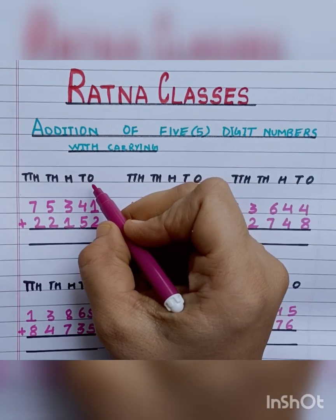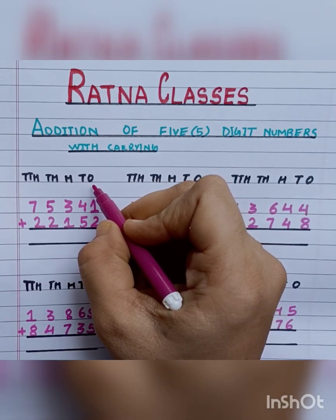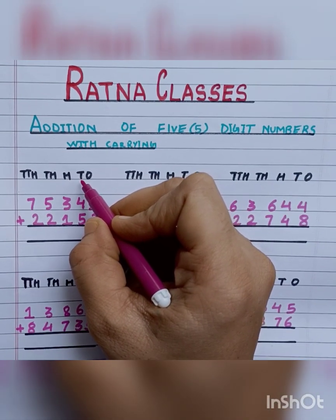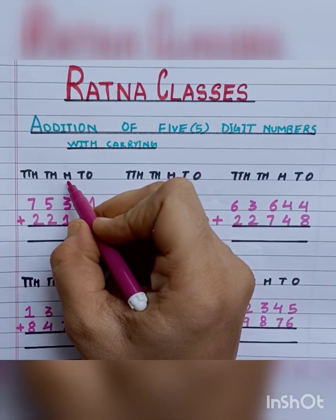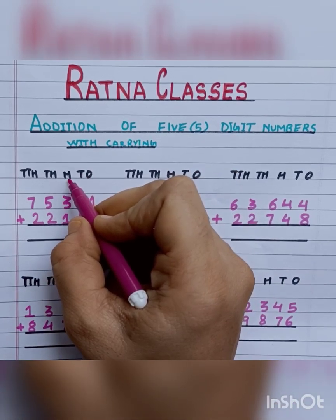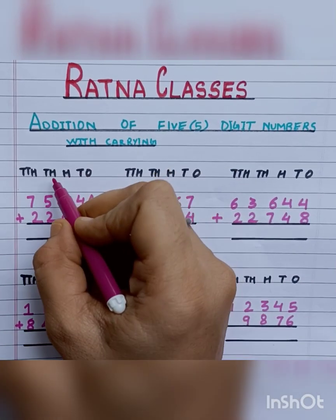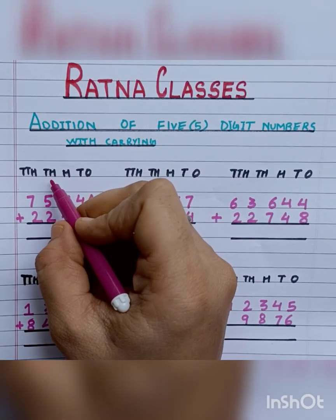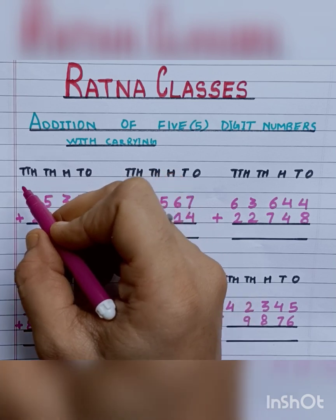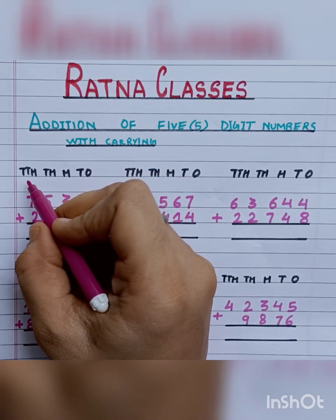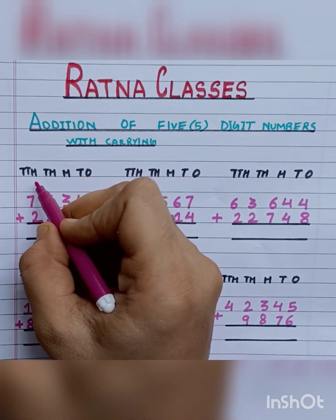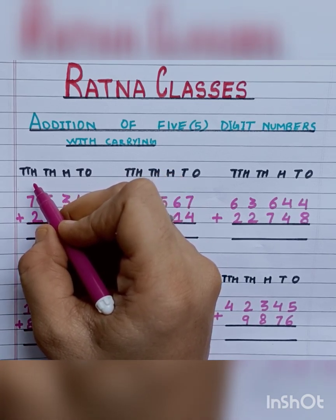This is the ones place (O), T is the tens place, H is the hundreds place, TH is the thousands place, and TTH is the ten-thousands place. Let's start adding.